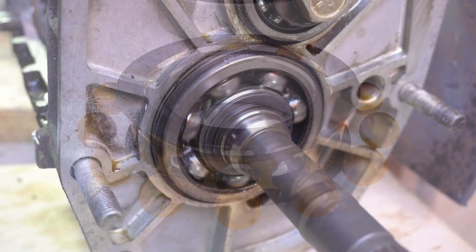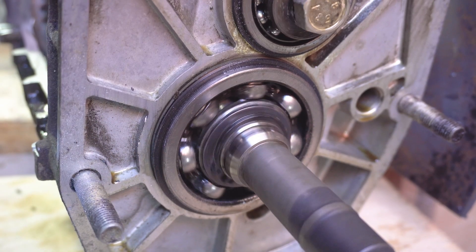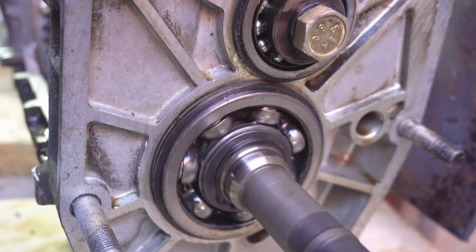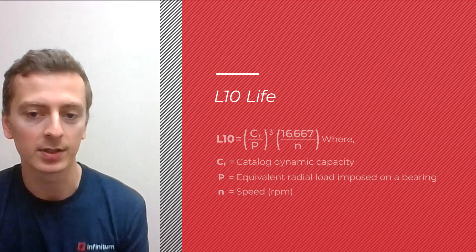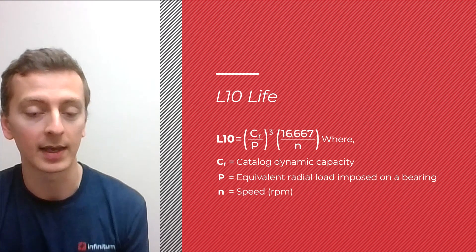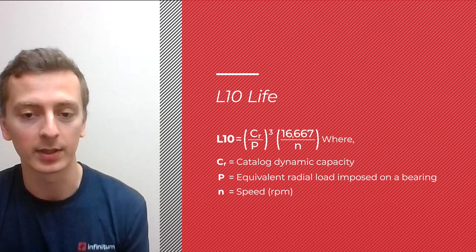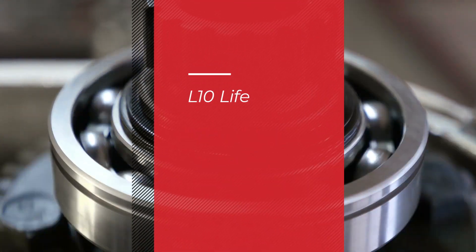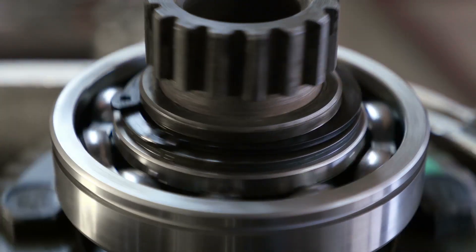The usual life rating for bearings in industrial applications is called the L-10 life. Simply put, L-10 life is a calculation to determine, with 90 percent reliability, how many hours a bearing will last under a given load and speed.